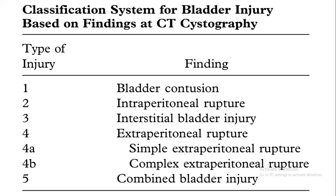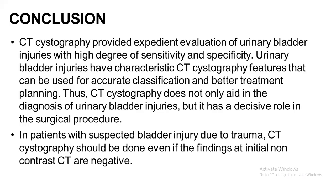This is the classification system for bladder injury based on CT cystography findings: Type 1 is bladder contusion, Type 2 is intraperitoneal rupture, Type 3 is interstitial bladder injury, Type 4 is extraperitoneal rupture — 4A simple extraperitoneal and 4B complex extraperitoneal rupture — and Type 5 is combined bladder injury.